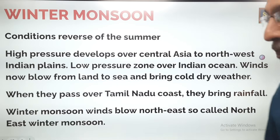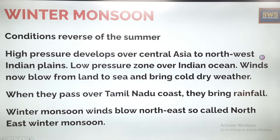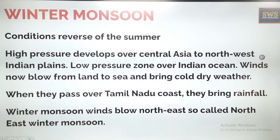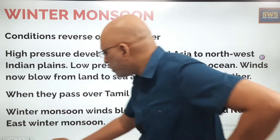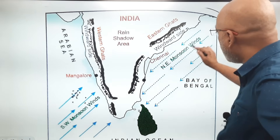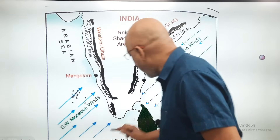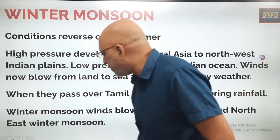Now the winter monsoon — conditions are the reverse of summer. A high pressure area develops over central Asia and moves to the northwest Indian plains. The low pressure zone is now over the Indian Ocean, so winds blow from the land to the sea, bringing cold dry weather. When these north easterly winter monsoon winds pass over the Tamil Nadu coast, they bring rainfall in November and December.